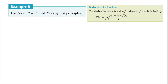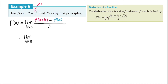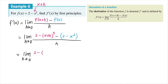Alright, the final example. For f of x equals two minus x cubed — a cubic function — find f dash of x by first principles. Let's write the formula first: f dash of x equals the limit when h is approaching zero. Using different colors: every time you see x, we're replacing x with x plus h. So it becomes two minus x plus h, the whole thing cubed, minus — making sure we put in the brackets — two minus x cubed. Now expanding the cubic bracket, it's going to be x cubed plus three x squared h plus three x h squared plus h cubed.